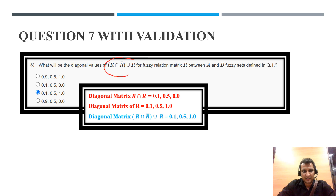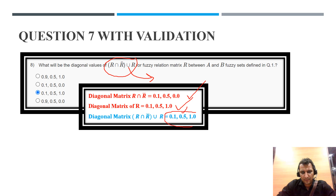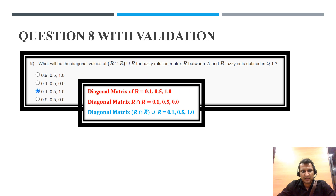Question 7: find (R intersection R̄) union R. R intersection R̄ gives us the values we computed before, and now we take the union with R — so we take the maximum. Maximum of 0.1 and 0.1 is 0.1; maximum of 0.5 and 0.5 is 0.5; maximum of 0 and 1 is 1. Therefore the diagonal values are 0.1, 0.5, and 1.0 — the correct option is selected.